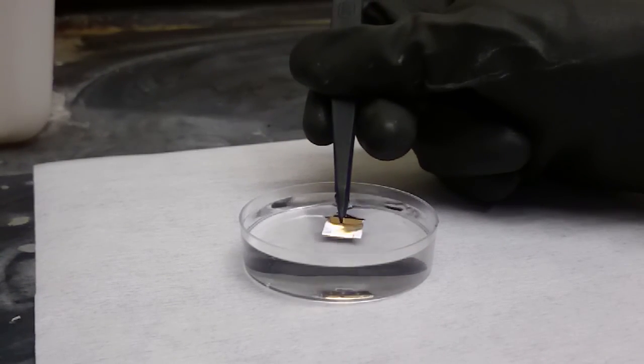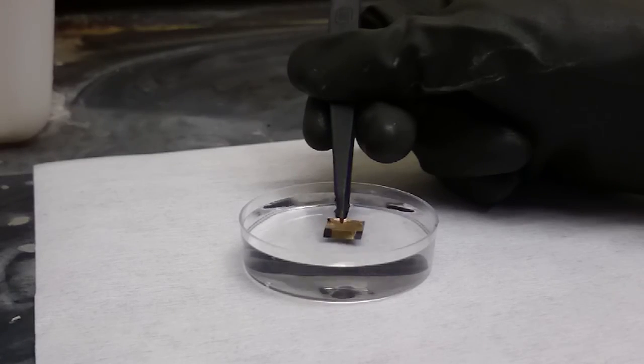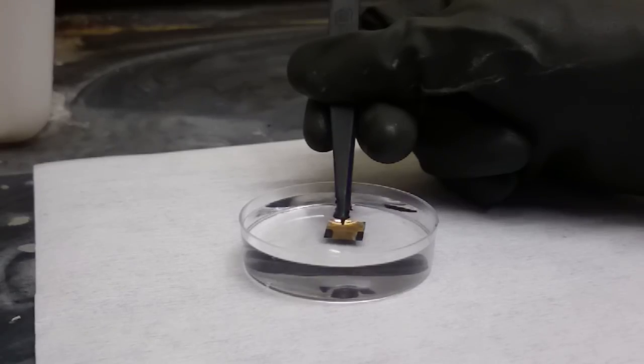We immerse the sheet of silicon with the gold wires on it into a chemical solution. And within seconds, the wires start to sink down into the silicon surface.